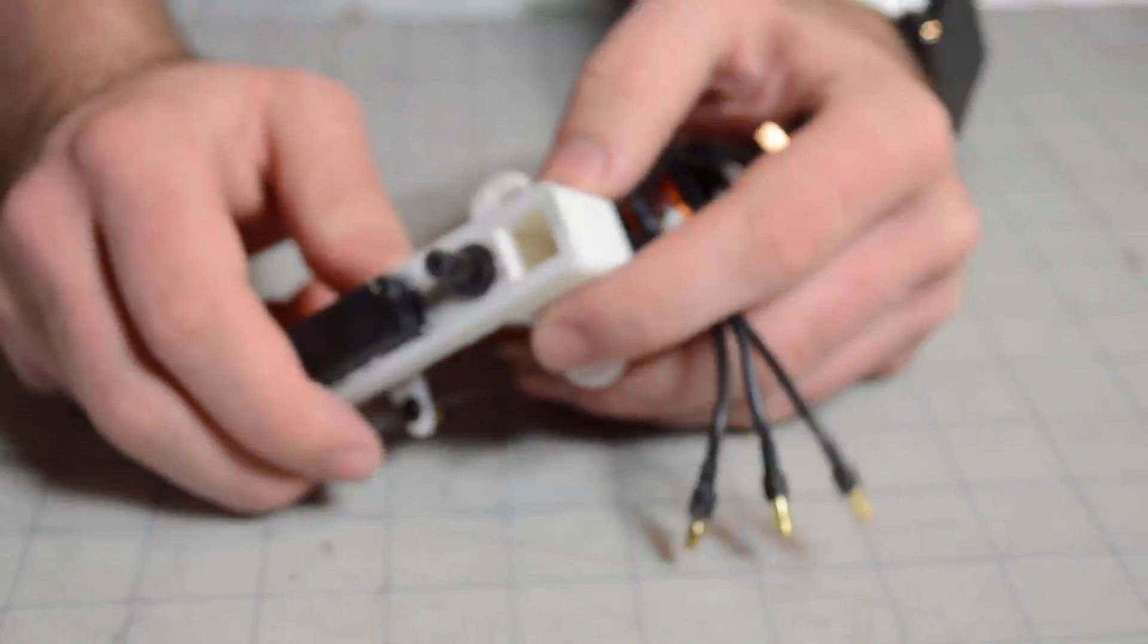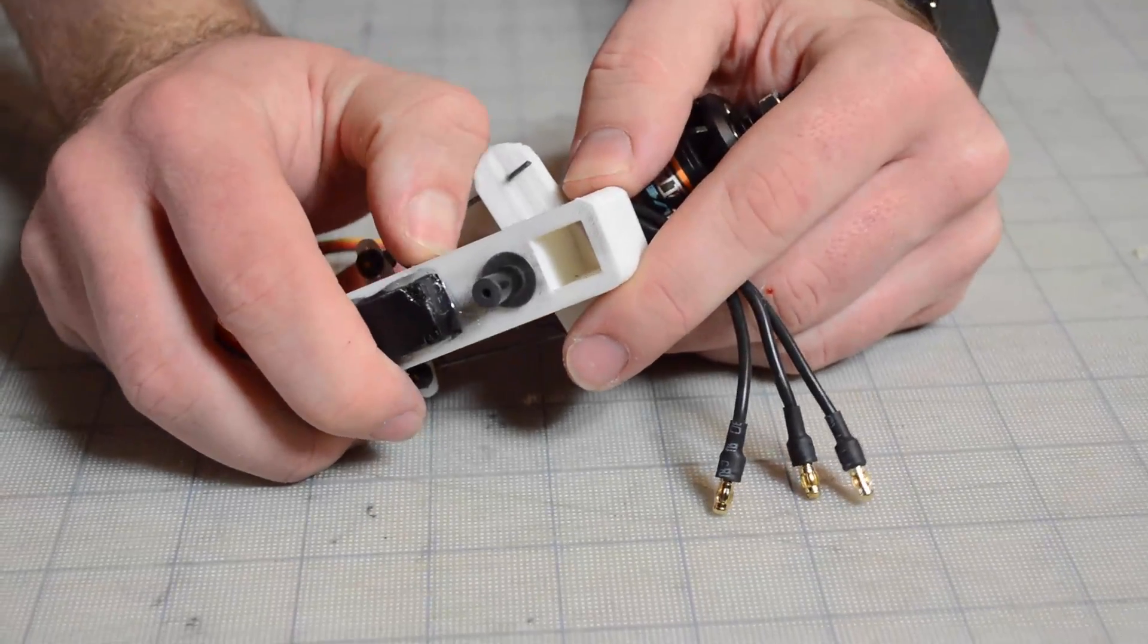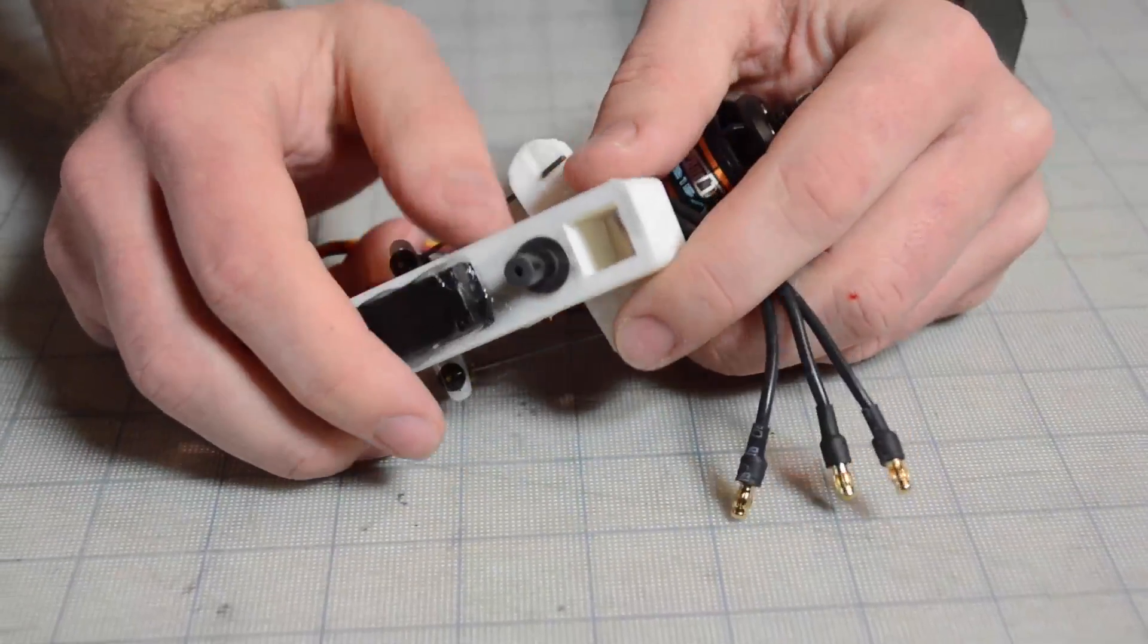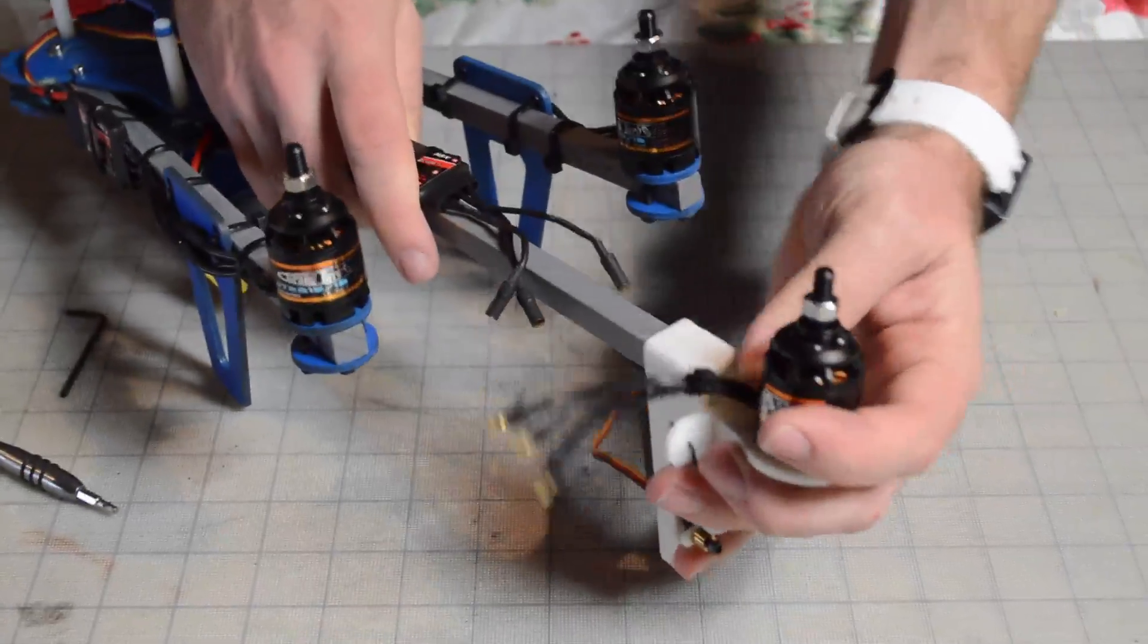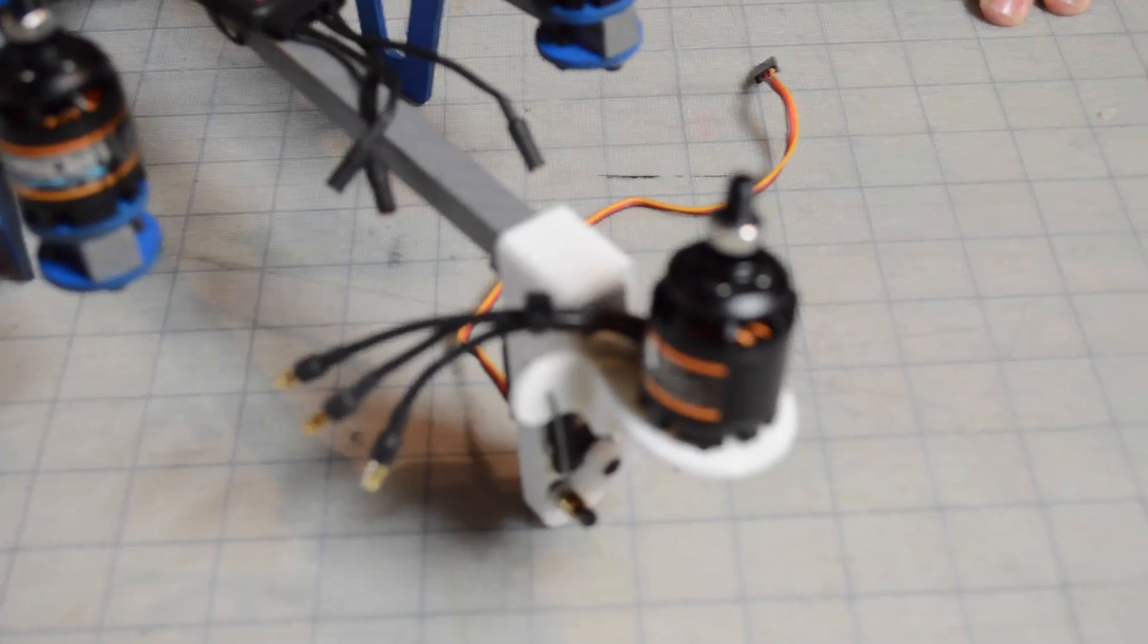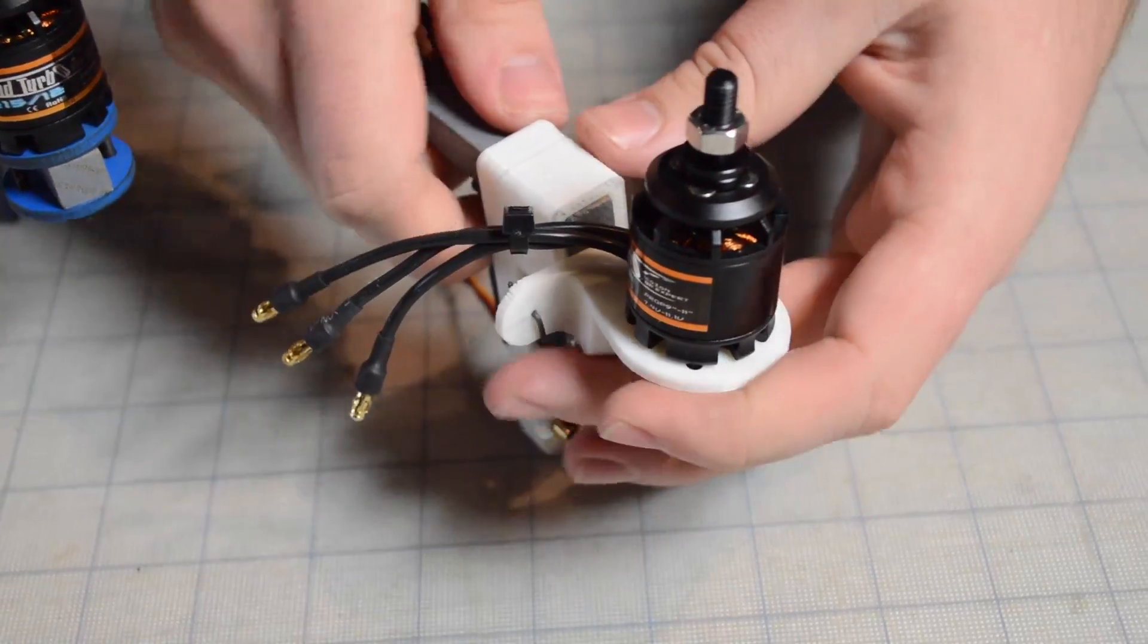And now all we have to do is attach it to an arm or in my case, attach it to a finished tricopter like this one. And so I'm just going to add a little bit of hot glue and then slide this whole tail assembly over until it's flush and then that's it. So let me do that right now.